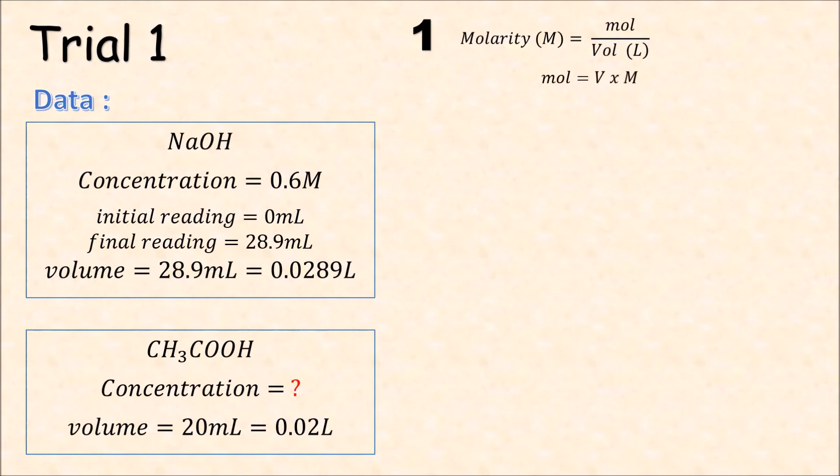To get the molarity, we will first get the mol of NaOH. We will multiply the volume by the molarity of NaOH. We have 0.01734 mol of NaOH.